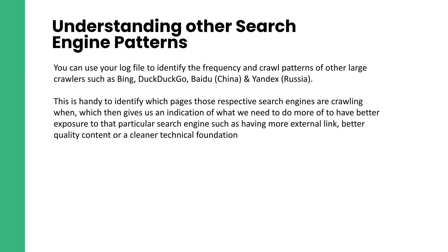You can also understand search engine patterns — identifying the crawl frequency of crawlers other than Google, such as Bing, Baidu, Yandex, and DuckDuckGo. DuckDuckGo is where it's at in 2021! This is handy because it can give us an indication of what that specific search engine is looking for on our site. Are they crawling pages with extensive content more frequently? Are they looking at pages with large link equity? It gives you an idea of what's working for that search engine, and you can increase the velocity of that method to see if you get a positive result.